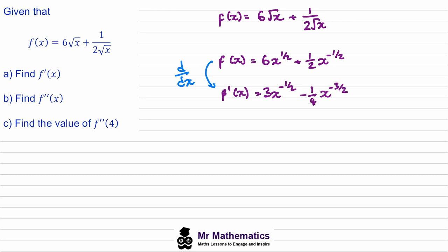For part b we differentiate again with respect to x to get f''(x). We differentiate and get negative 3/2 times x to the minus 3/2, plus 3/8 times x to the minus 5/2.